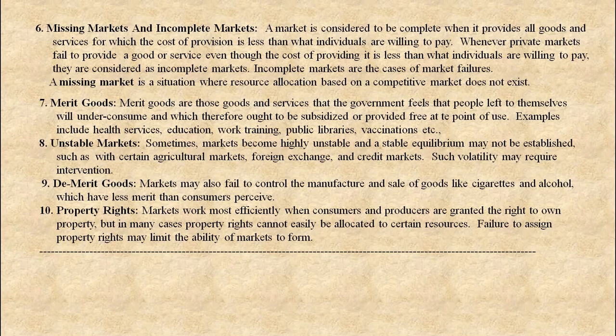Next: Property rights. Markets work most efficiently when consumers and producers are granted the right to own property. But in many cases, property rights cannot easily be allocated to certain resources. Failure to assign property rights may limit the ability of markets to form.